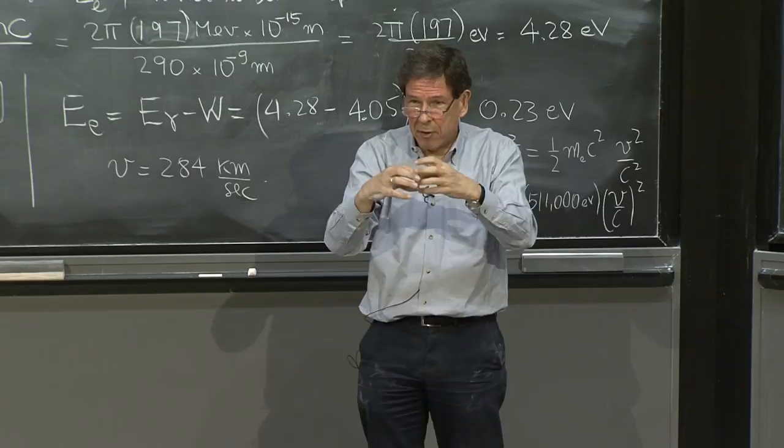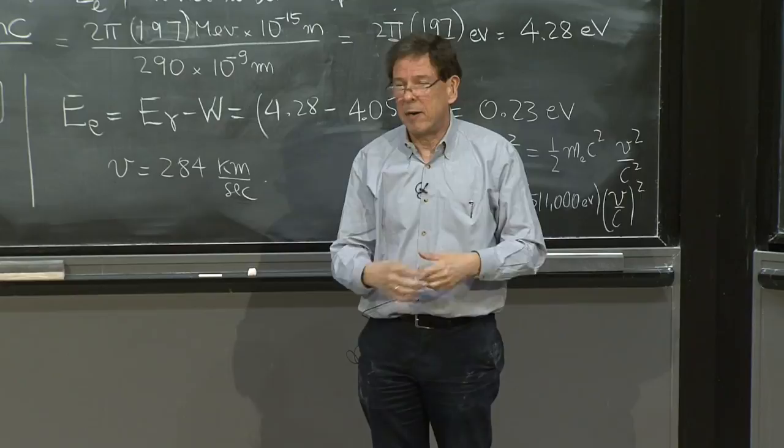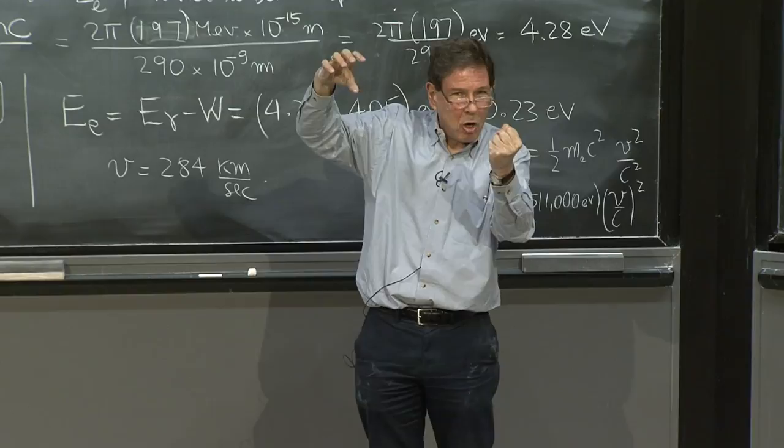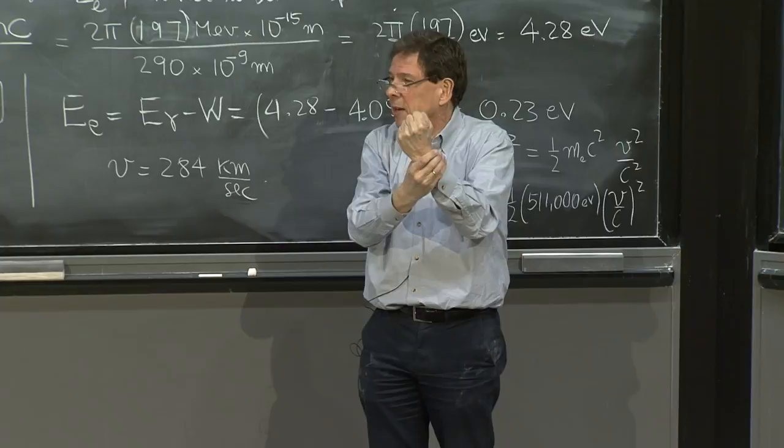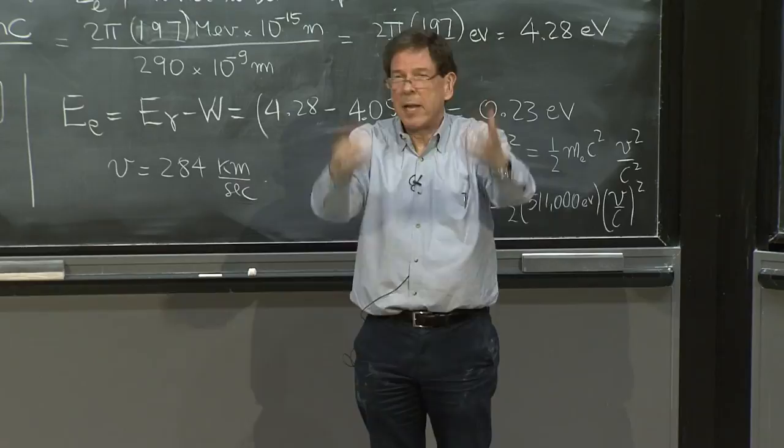that photon is carrying as much energy as the rest energy of the electron. And in particle theory, in quantum field theory, particles can be created and destroyed. So this photon maybe can do some things and create more particles out of this electron. Particle creation could start happening. So it will be difficult to isolate the particle to a size smaller than its Compton wavelength. Because the photons could do such damage to the particle by creating new particles or doing other things to it.